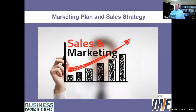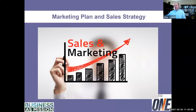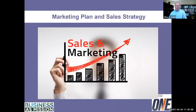Then we think about how we're going to reach customers: the marketing plan and sales strategy. Marketing looks at things like what kind of materials do we need — pamphlets, brochures, catalogs, online presence, social media. Sales is about how do we reach the customer — with sales reps or online? How does somebody buy our product? What's our sales strategy?